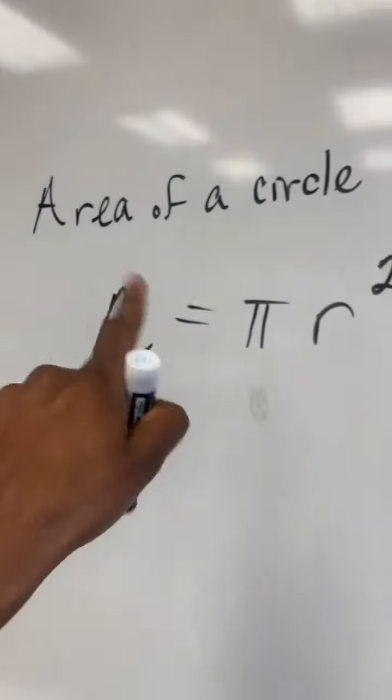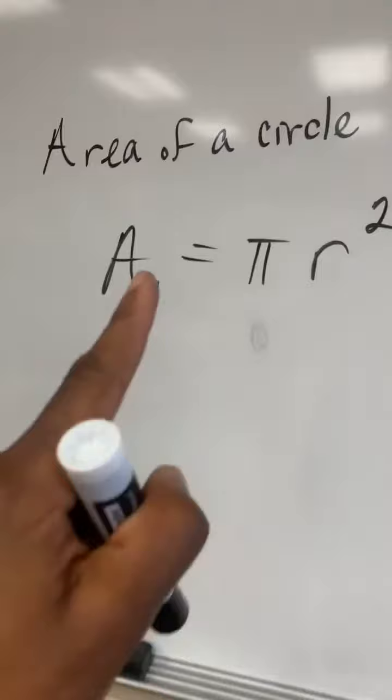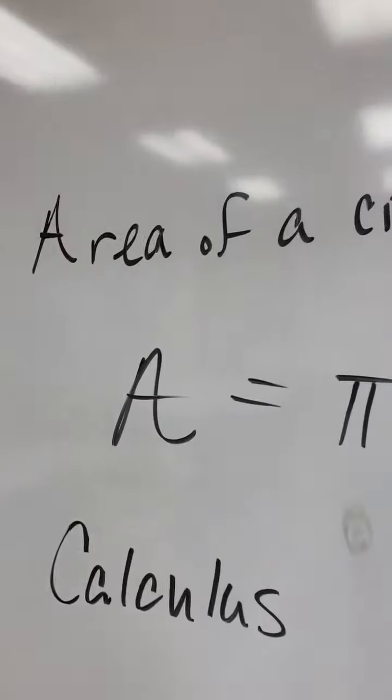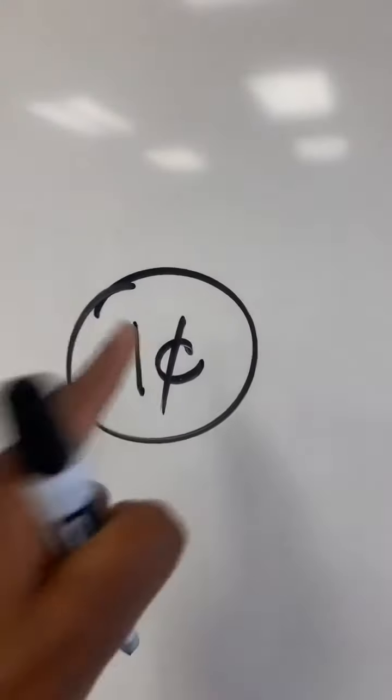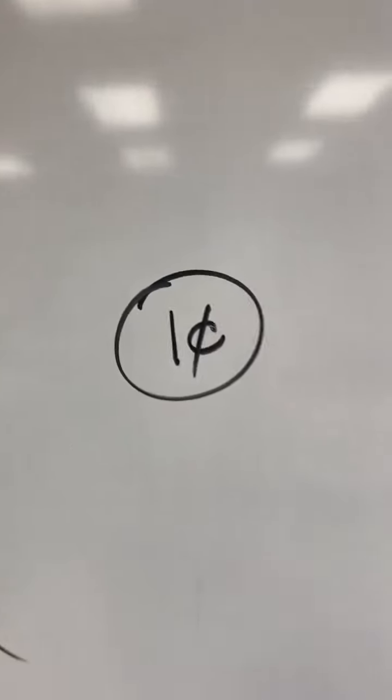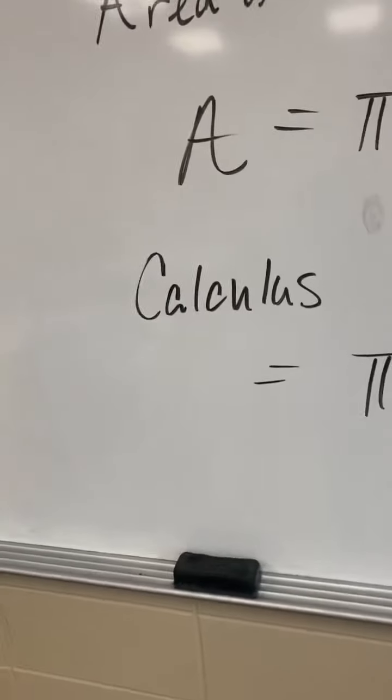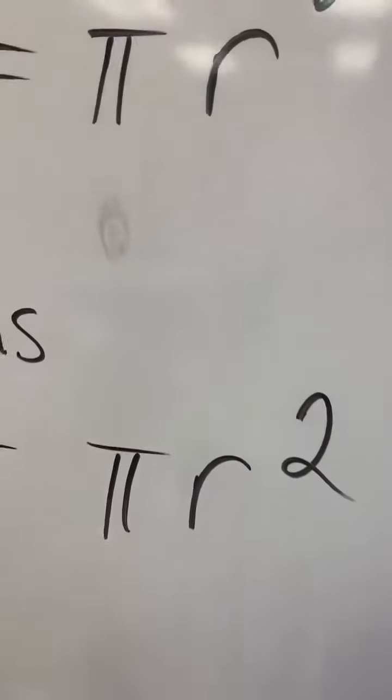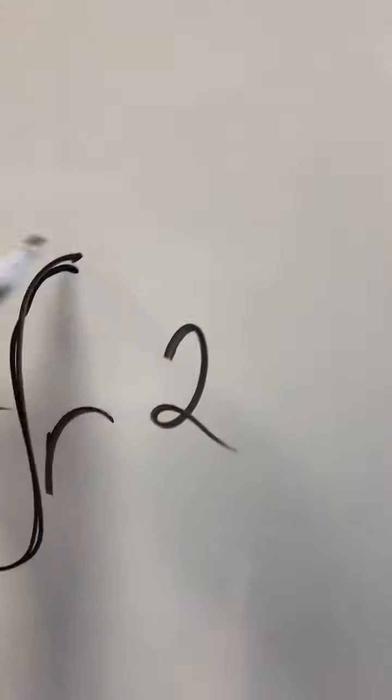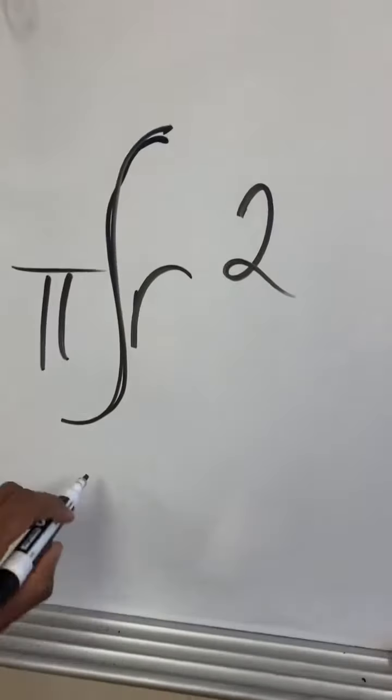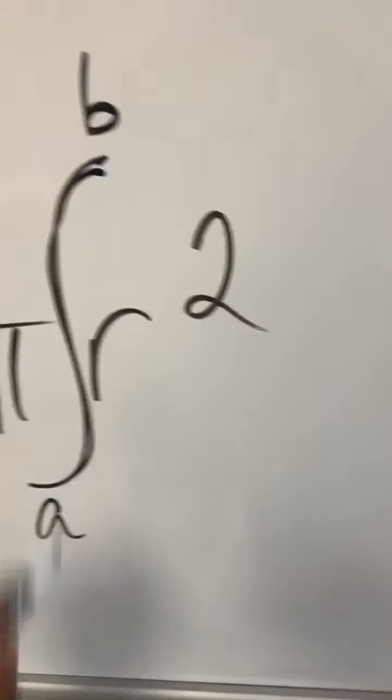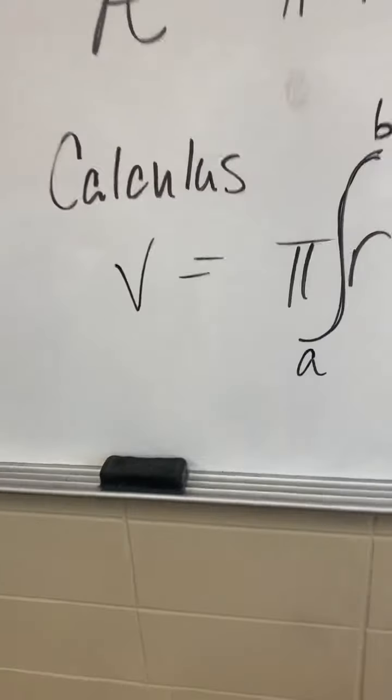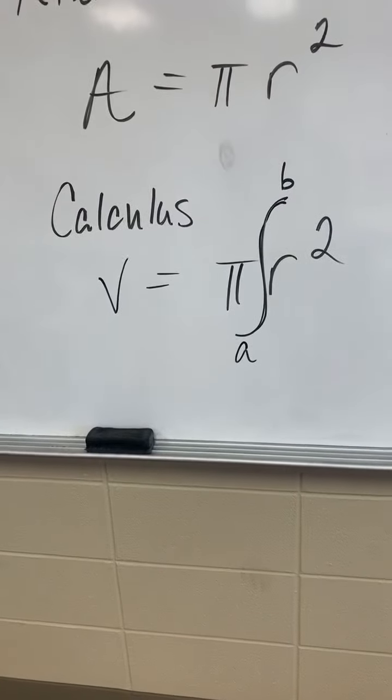Area of a circle, A is equal to pi r squared. This will give you the area of a single circle. All right, so that area of a circle, area is equal to pi r squared. That will give you the area of just that one penny. But in calculus, we take that same formula, which is the area of a circle, and we do something different to it. The only thing we're going to do to it is that. We're going to add an integral right there, and we're going to take that from a to b, and it's no longer area. It becomes a volume. I hope that makes sense.